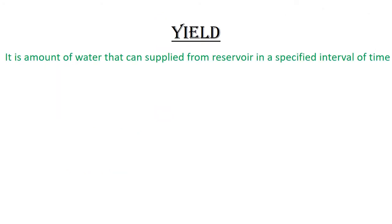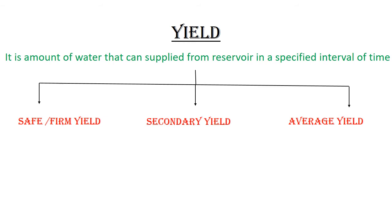The next topic is yield. Yield means the amount of water we have to supply from the river. There are three types of yield: safe and firm yield, secondary yield, and average yield.